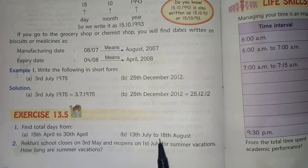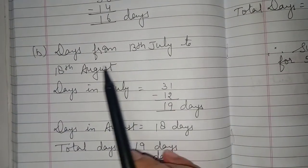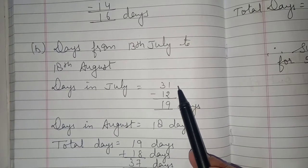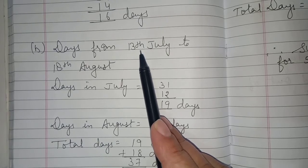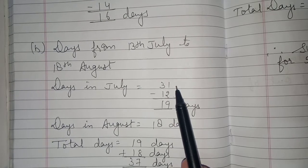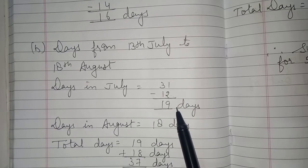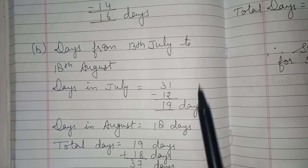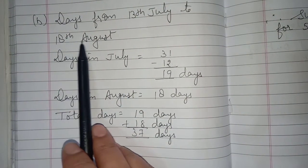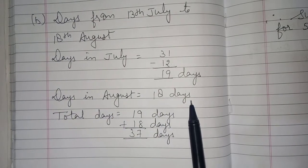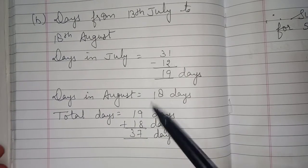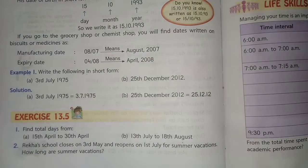Part B: from 30th July to 18th August. First, find the days in July — there are 31 days total. We find from 13th July, so we subtract the 12 days before it. 31 minus 12 gives us the days from 13th July to 31st July. Then days in August up to 18th August is 18 days. So total: 19 days in July plus 18 days in August equals 37 days.